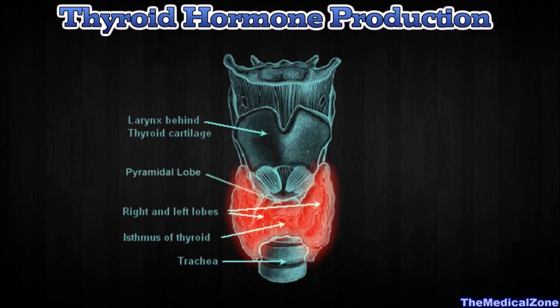In this video we'll have a look at the thyroid gland and the process of thyroid hormone production. The thyroid gland is located at the front of your neck, below the larynx, on both sides of and anterior to the trachea. The anterior part is referred to as the isthmus, which connects the lobes anteriorly.